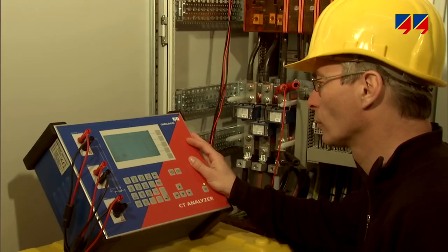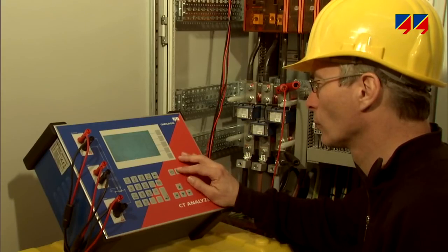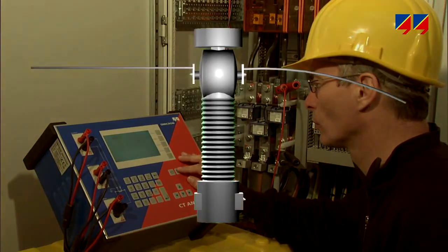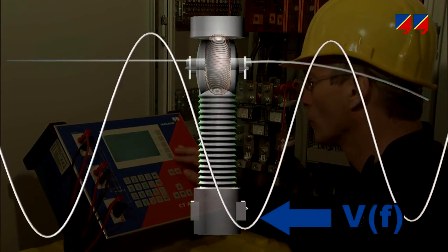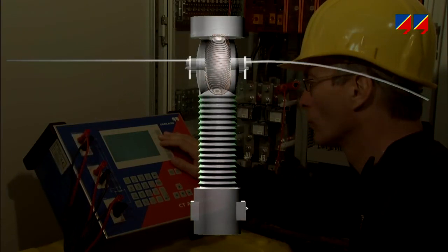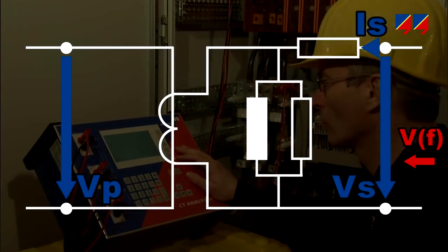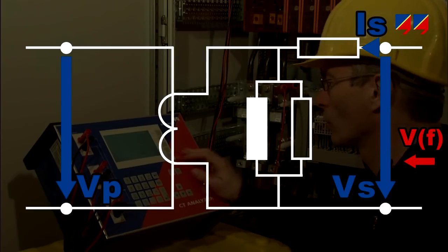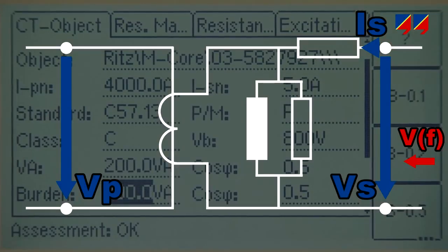CT Analyzer allows the limitations of the various traditional methods to be overcome. It opens the black box through secondary injection with variable frequency, and a patented low-voltage, low-frequency method for excitation measurement. It identifies all the parameters of the CT equivalent circuit diagram, and thus accurately determines the CT's behavior for protection and metering applications.